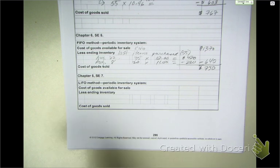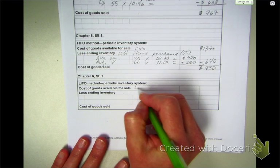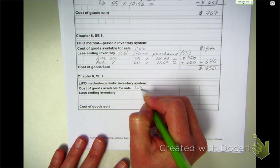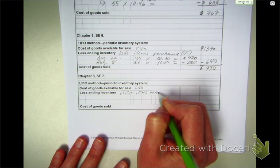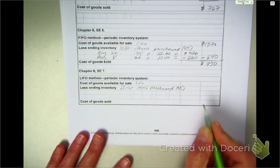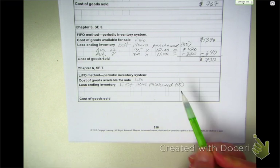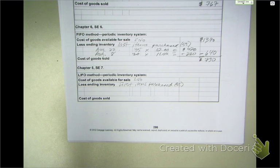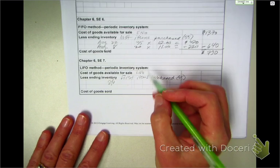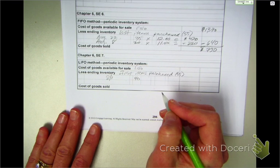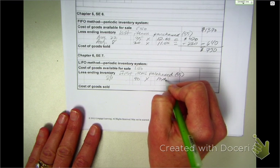SE7. I'm going to look at last in, first out. So, the cost of goods sold is going to be under LIFO. Is the last items in are the first items out? So, my ending inventory is going to be based on the first items purchased. I would write down for 55 units. Because my ending inventory is going to be based on the first items purchased. So, I've got to get up to 55 units, and I start with the first items purchased. So, I've got inventory on August 1st of 40 items.